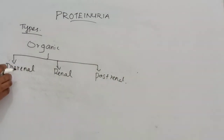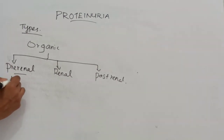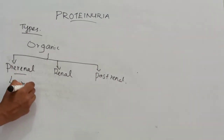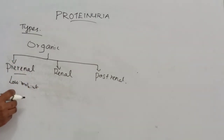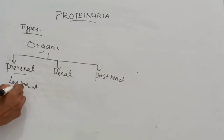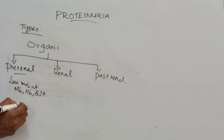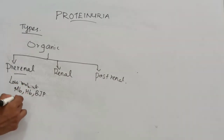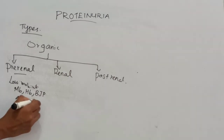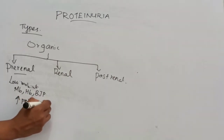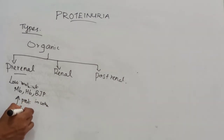Pre-renal proteinuria is associated with accumulation of low molecular weight proteins in the bloodstream, such as myoglobin, hemoglobin, and Bence-Jones proteins, which can be filtered in the glomerulus. This leads to increased protein concentration in the urine and failure of complete reabsorption by tubular cells.